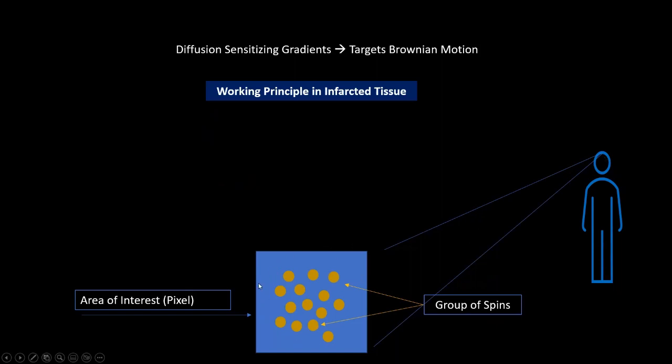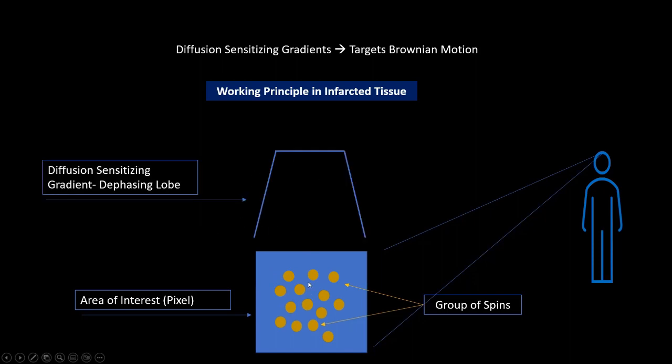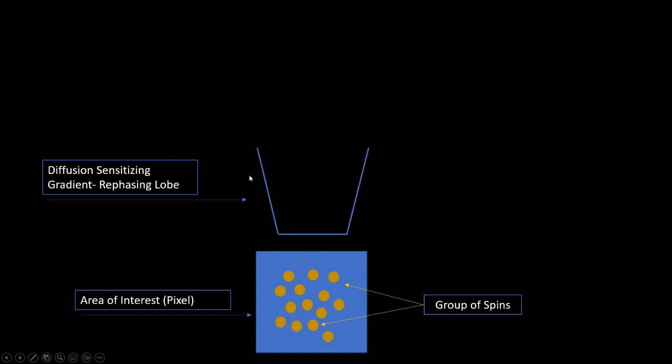We are going to take a small area of interest. For example, a pixel. Consider this pixel. This pixel consists of a group of spins. Because this tissue is infarcted, there won't be any Brownian motion. Hence, what will happen? These spins won't move, actually. So now I'm going to apply a diffusion gradient, which dephases the signal. Meaning, when I switch on this gradient, it will kill all the signal from this group of spins inside the pixel. Immediately after that, I will apply another diffusion gradient in which the polarity is opposite compared to the previous gradient into the same pixel. So this gradient is called a rephasing gradient.